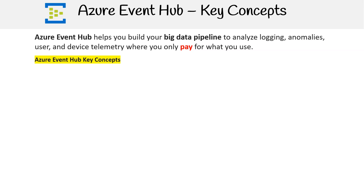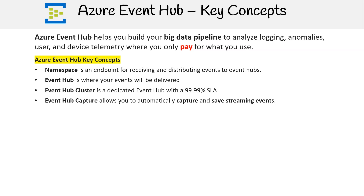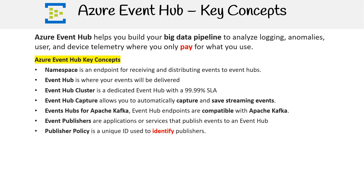Breaking down the key concepts of Azure Event Hub: Namespace is an endpoint for receiving and distributing events to event hubs. Event Hub is where your events will be delivered. Event Hub Cluster is a dedicated event hub with a 99.99% SLA. Event Hub Capture allows you to automatically capture and save streaming events. Event Hubs for Apache Kafka — Event Hub endpoints are compatible with Apache Kafka. Event Publishers are applications or services that publish events to an event hub. Publisher Policy is a unique ID used to identify publishers.